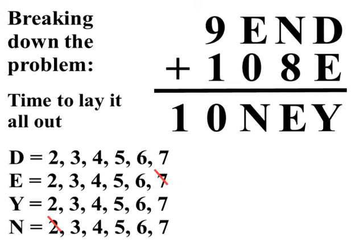That means the remaining four letters have to have values between 2 and 7. What's more, since N is one more than E, we know N can't be 2, and since E is one less than N, we know E can't be 7.